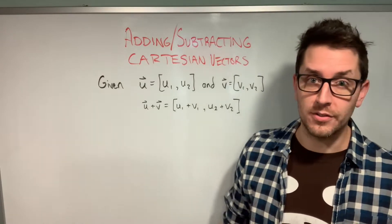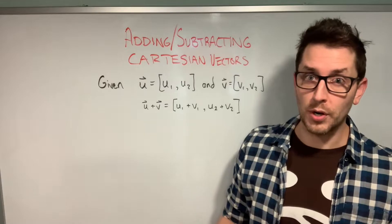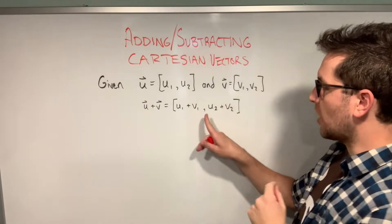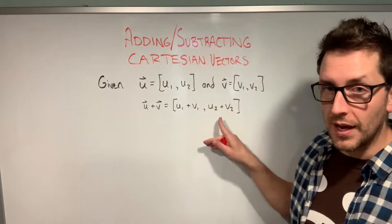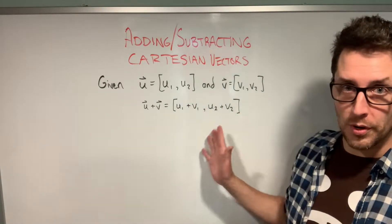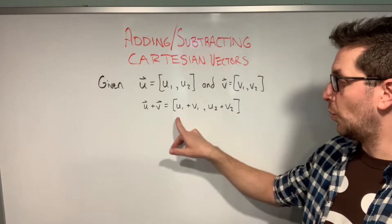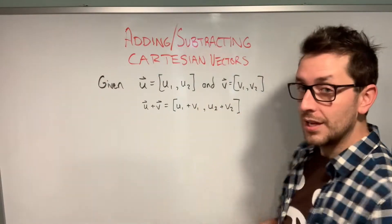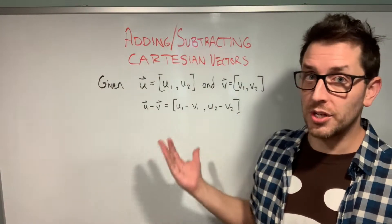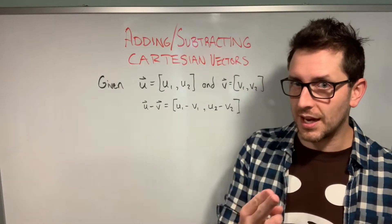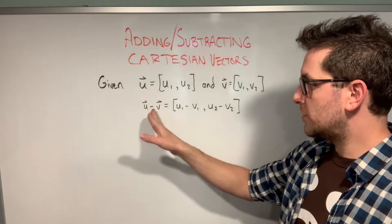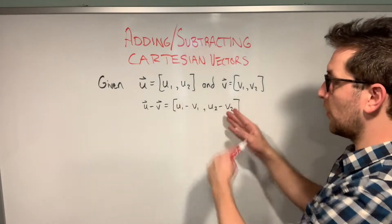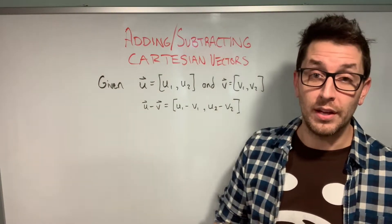We have two Cartesian vectors and we'll start by looking at how to add them. It's a very simple process: take the x component of each vector and add them together, place a comma, then add the y components. So U plus V gives us U1 plus V1 for the x component, and U2 plus V2 for the y component. Subtraction is exactly the same — we just swap the plus sign for a minus sign, giving U1 minus V1 and U2 minus V2.